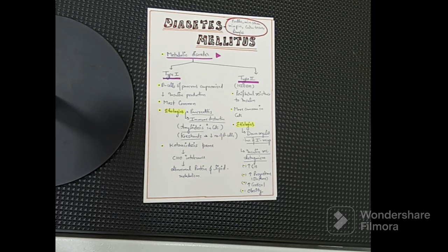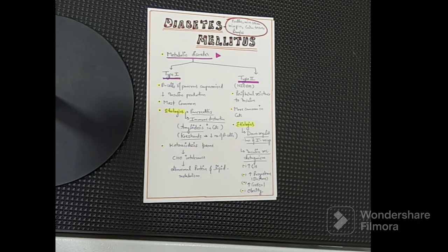In Type 1, ketoacidosis is the most common complication. Because of this abnormal carbohydrate metabolism, there will also be abnormal protein and lipid metabolism.